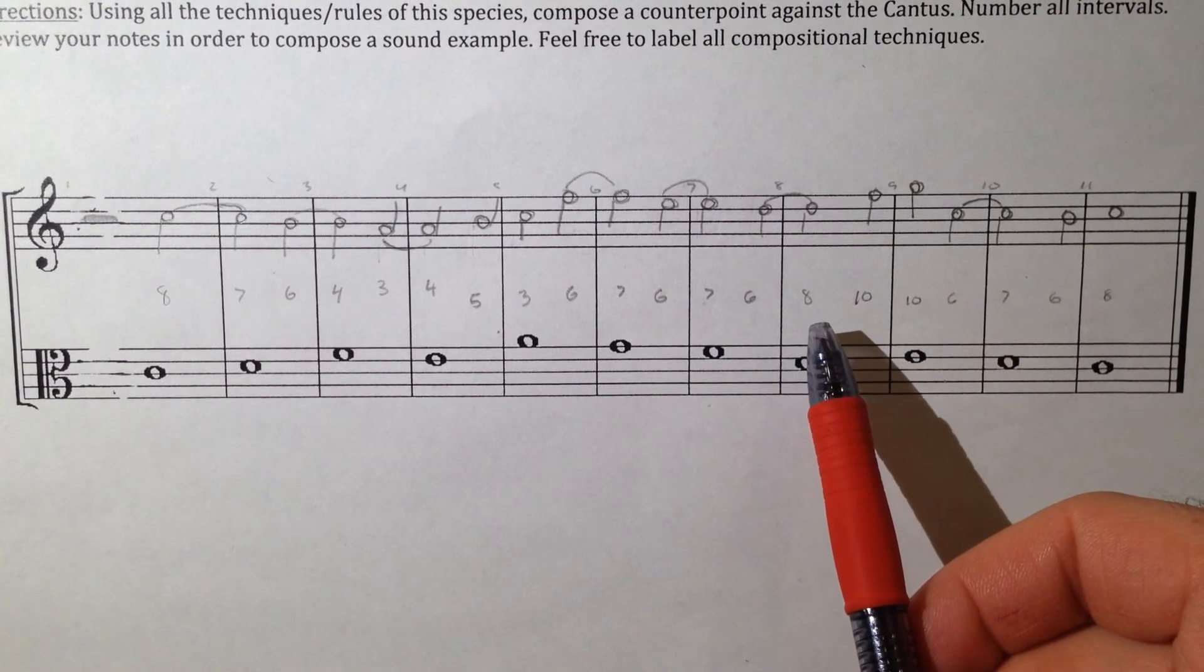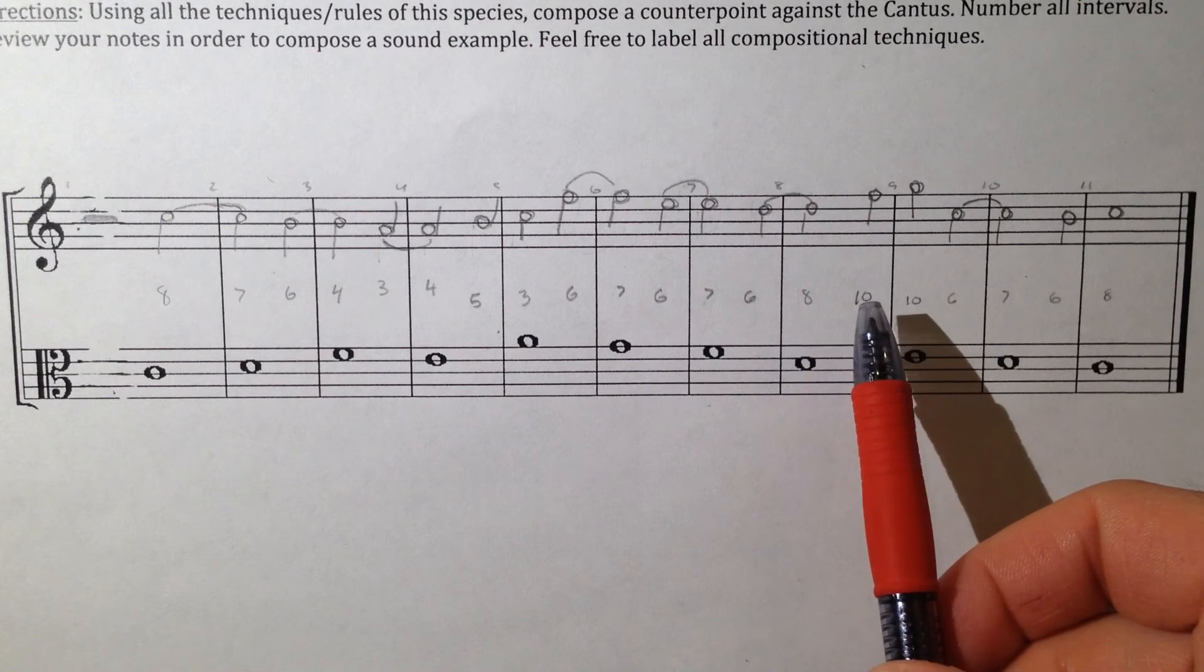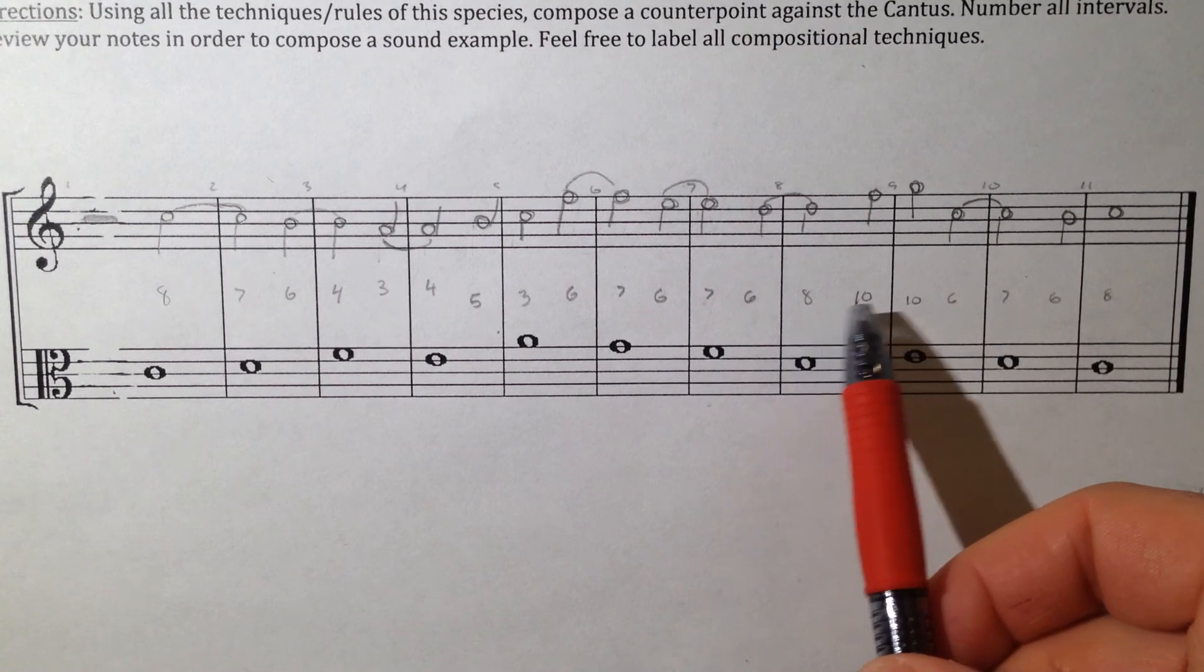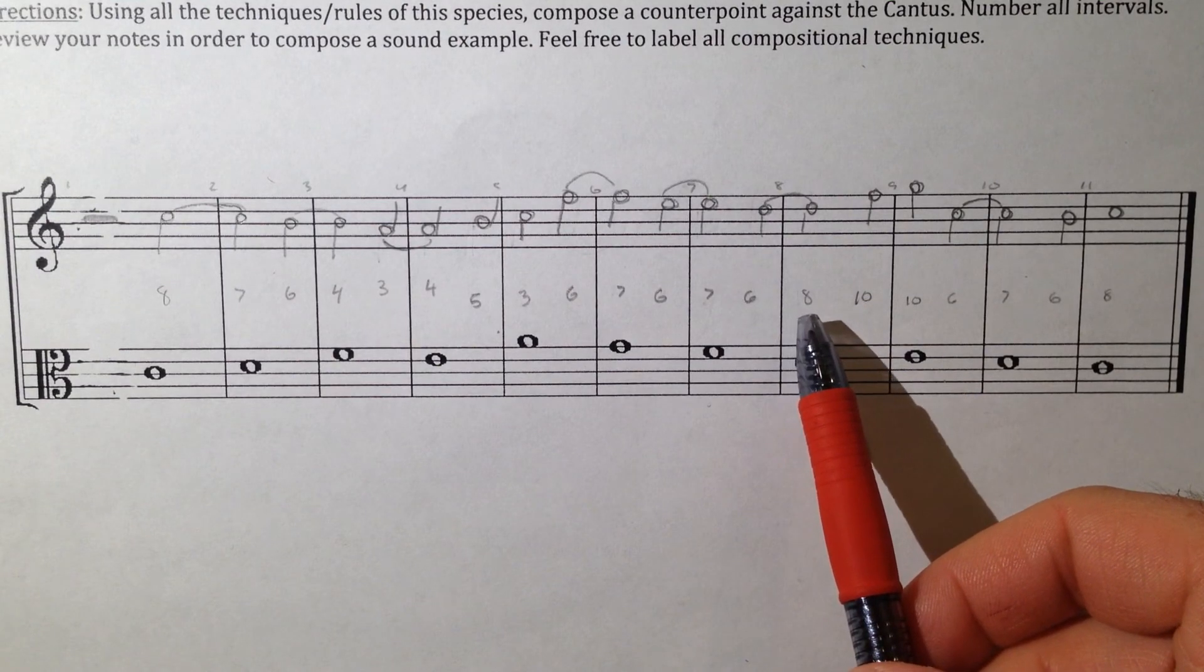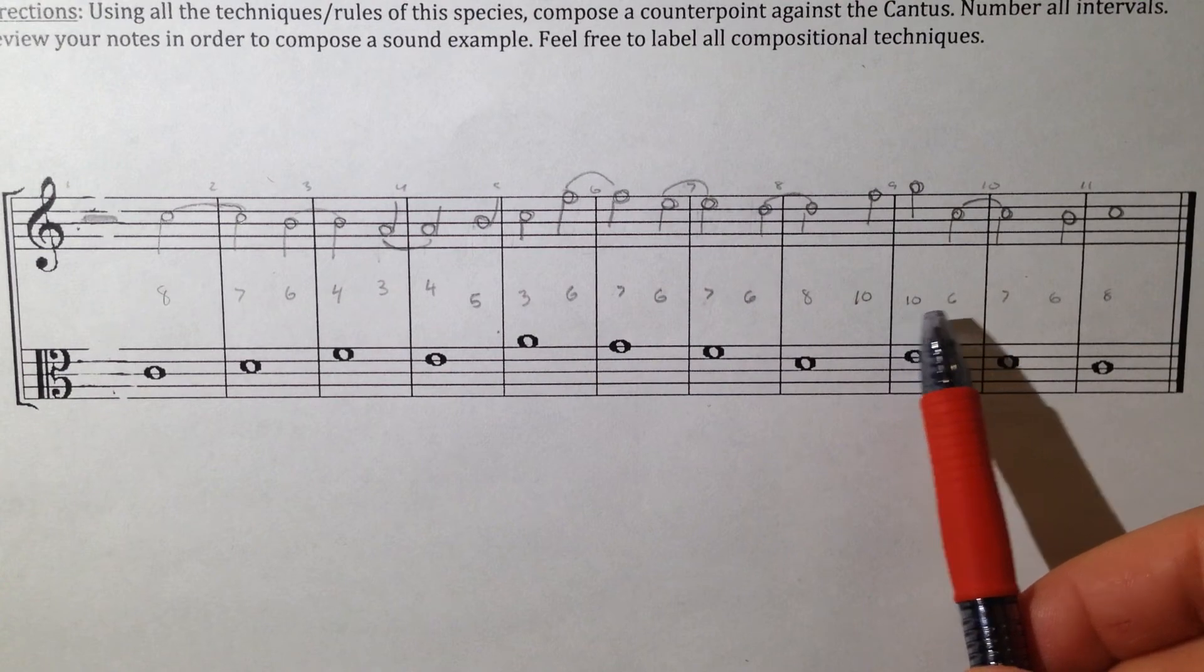The only time that you can skip is preferably within the measure and involving two consonant intervals. So here is that occasion. Here's another occasion, 10, 6.